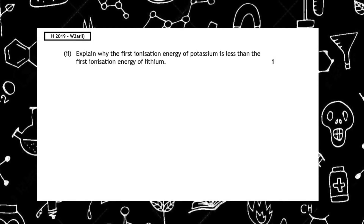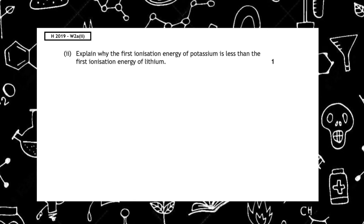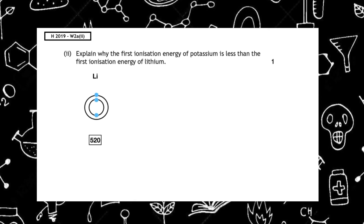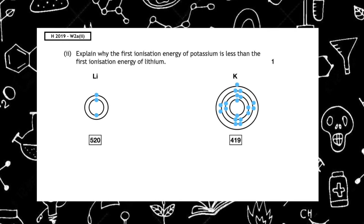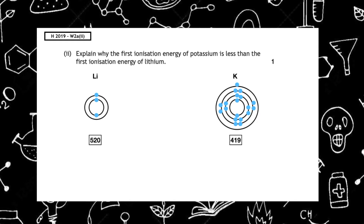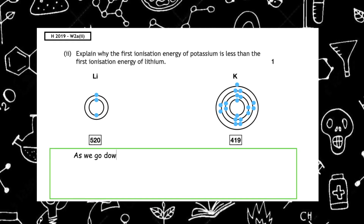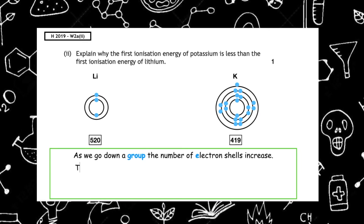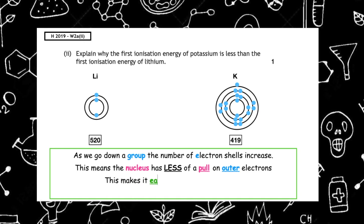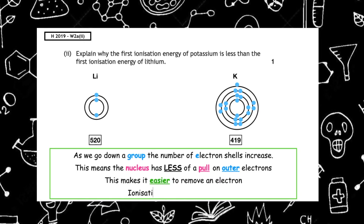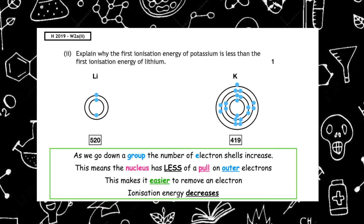Part 2 of this past paper asks us to explain why the first ionization energy of potassium is less than the first ionization energy of lithium. Drawing out the structures and obtaining the first ionization energies from the data booklet on page 12, we can see that as we go down a group, the number of electron shells increase. This means the nucleus has less of a pull on the outer electrons, making it easier to remove an electron, and therefore the ionization energy decreases.